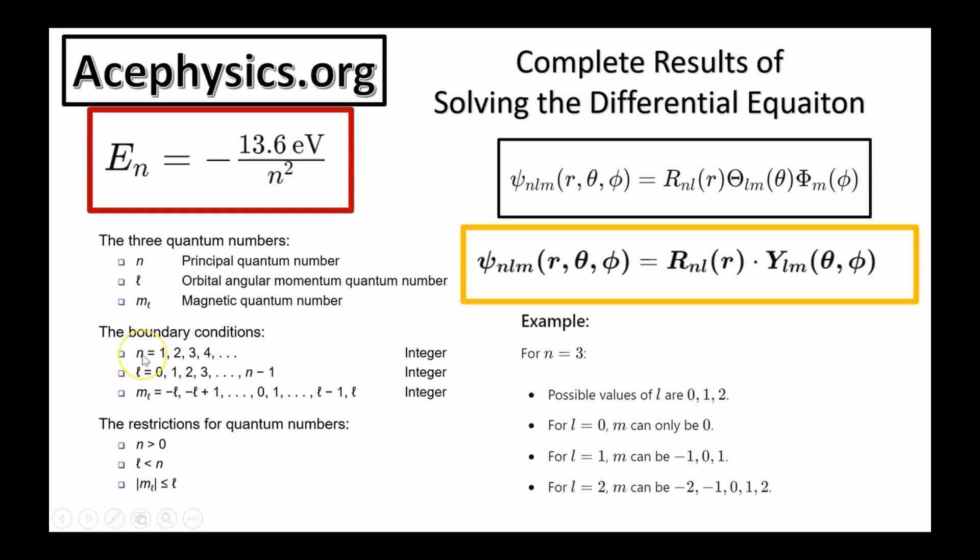n takes on integer values, it starts as one, and it can go as high as you like. It can go as high as a pie in the sky, although can it really equal to infinity? I think not. l takes on integer values starting from zero and going to n minus one, so l depends on n, and ml goes from negative little l to plus little l. As an example, when n is equal to three, the possible l values are zero, one, and two. As you notice, two is equal to three minus one.